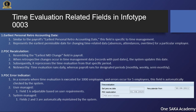Field 3 — PDC Error Indicator: In a scenario where time evaluation is executed for 1,000 employees and errors occur for 5 employees, this field is automatically checked by the system. Field 1 is a user-managed field, adjustable based on user requirements. Fields 2 and 3 are system-managed fields, automatically maintained by the system.